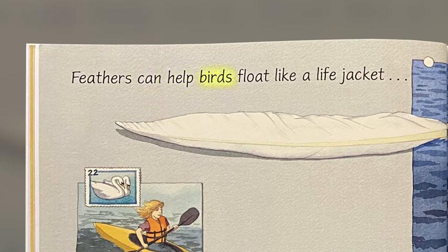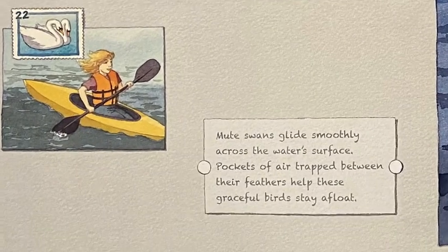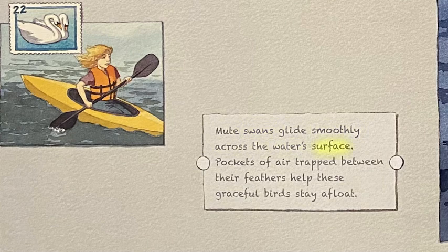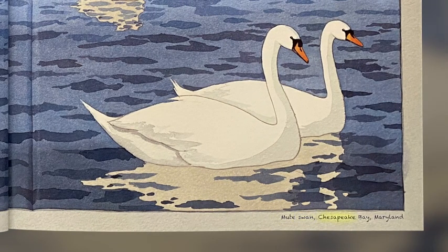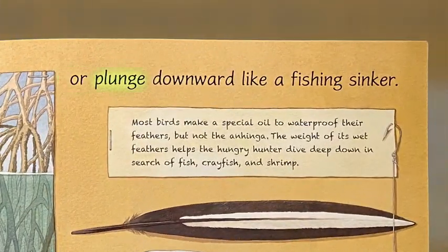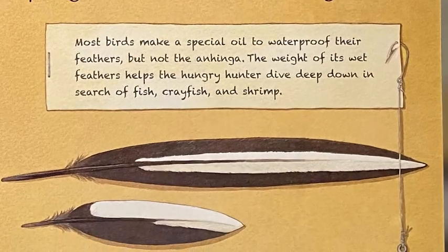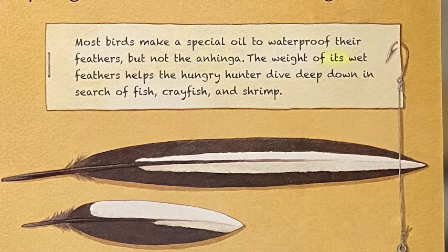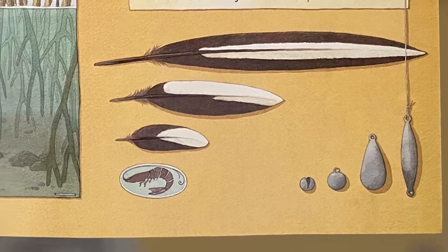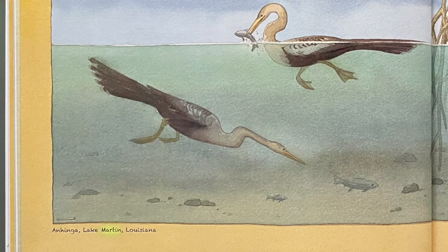Feathers can help birds float like a life jacket. Mute swans glide smoothly across the water's surface. Pockets of air trapped between their feathers help these graceful birds stay afloat. Or plunge downward like a fishing sinker. Most birds make a special oil to waterproof their feathers, but not the anhinga. The weight of its wet feathers helps the hungry hunter dive deep down in search of fish, crayfish, and shrimp.